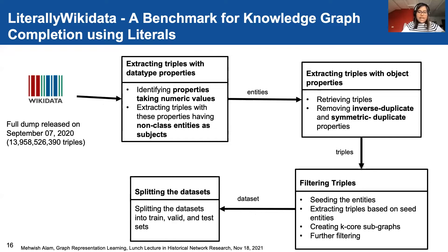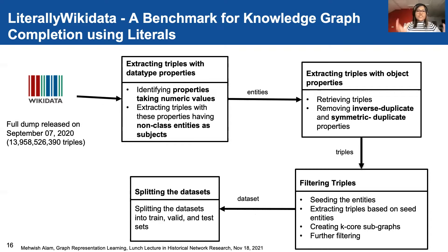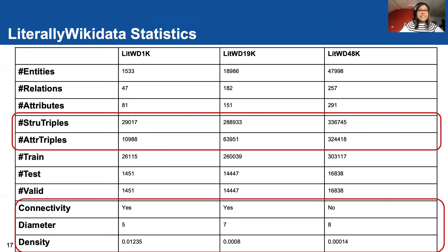After this work, we realized that the existing datasets are not really suitable for this kind of literal information. You have to take existing benchmark datasets and extract information, which is sometimes incomplete. So in our work, we started from numeric values like longitude, latitude, and birth date from Wikidata, went one hop backwards, and generated our whole dataset. We generated several sizes and divided them into train, validation, and test datasets.